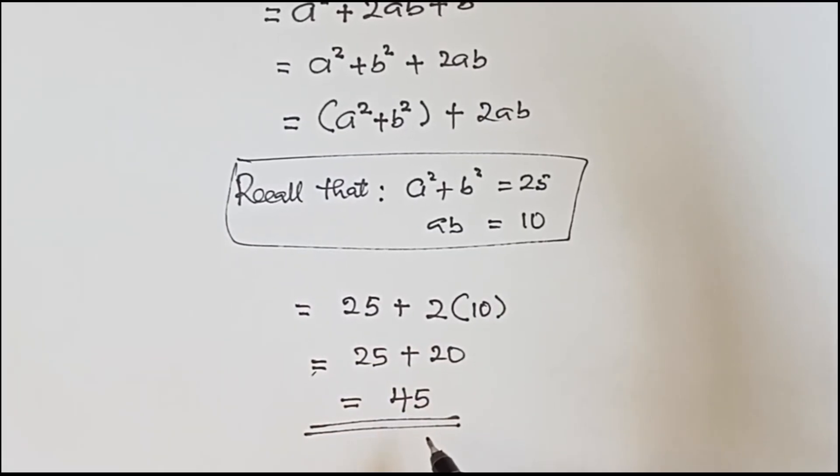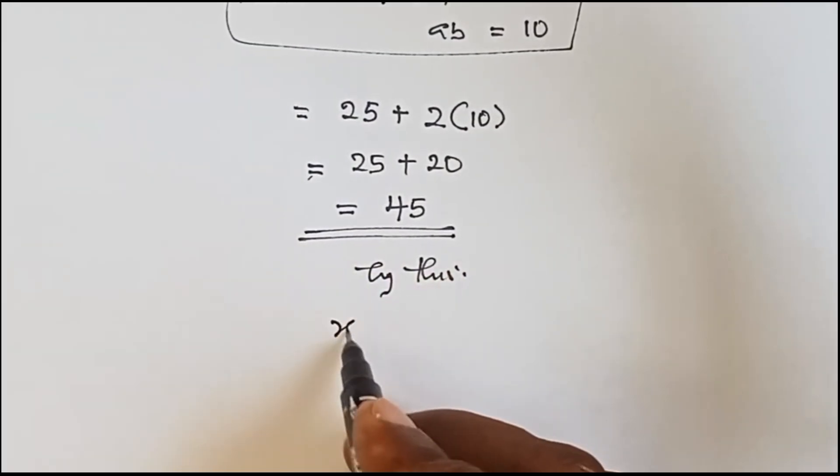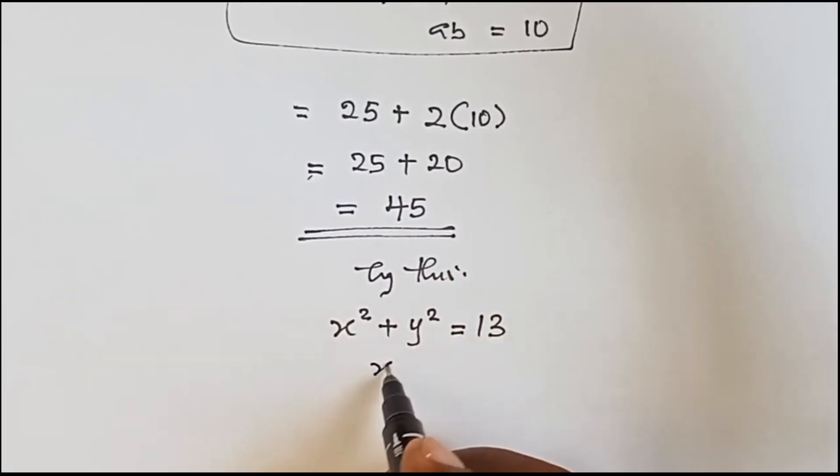It means our final answer is 45. Now here's a practice problem: we have x² + y² to be 13 and we have xy to be 5. Now find (x + y)².